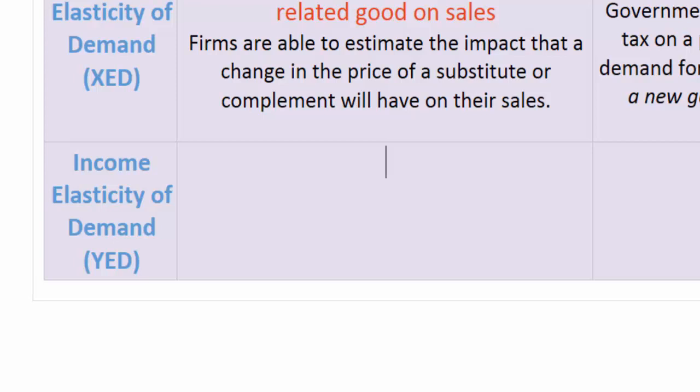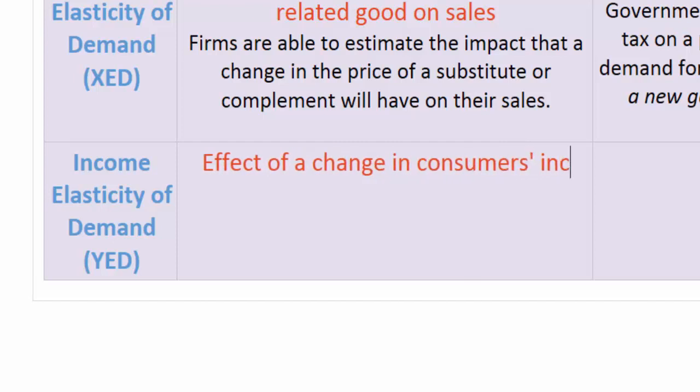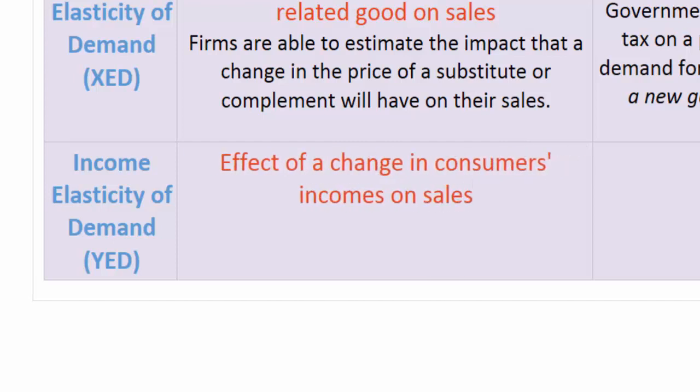This allows businesses to make informed decisions about production because they will know the effect of a change in consumers' incomes on sales. For example, during recessions when incomes are falling, producers of inferior goods will want to increase their output. However, when incomes are rising or an economy is in an expansion phase, producers of inferior goods will want to decrease their outputs to compensate for the decreased demand that will follow higher incomes.